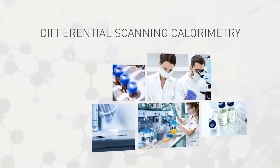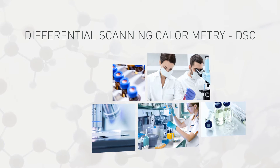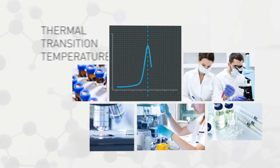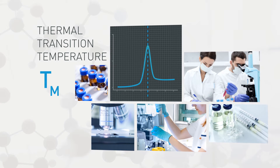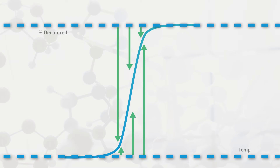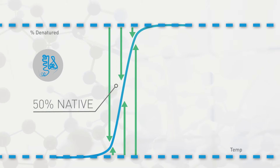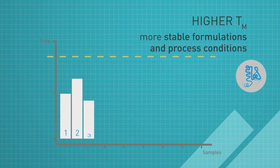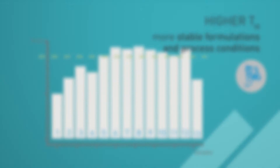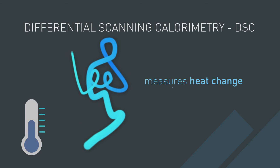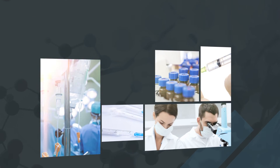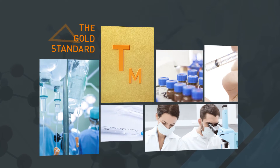Thermal stability characterization by differential scanning calorimetry, or DSC, is commonly used for comparability studies of biopharmaceuticals. DSC measures the protein's thermal transition temperature, or TM. For reversibly denatured proteins, the TM is the temperature at which 50% of the protein is native and 50% is denatured. Higher TMs correlate to more stable formulations and process conditions. DSC works by measuring the heat change of protein unfolding during thermal denaturation. DSC is universally considered the gold standard for measuring the TM of proteins in solution.